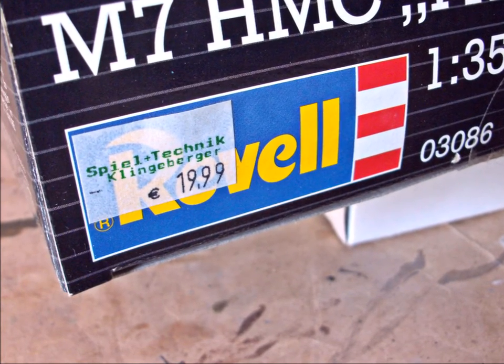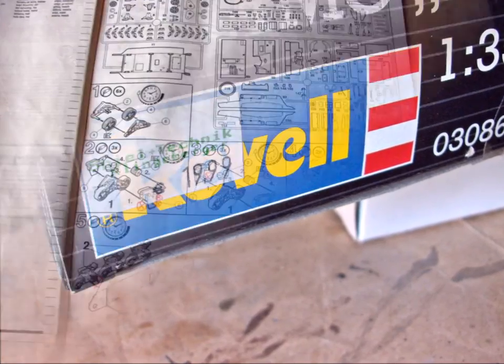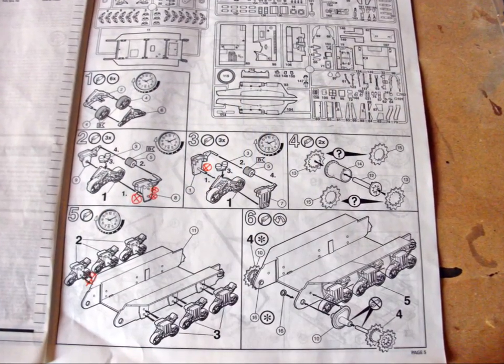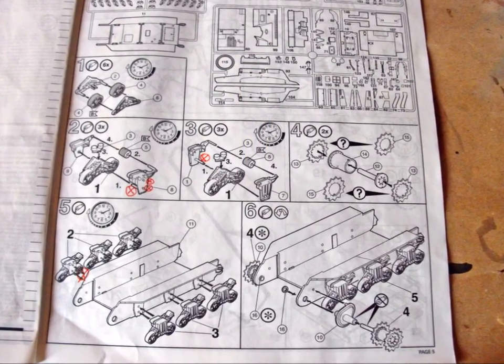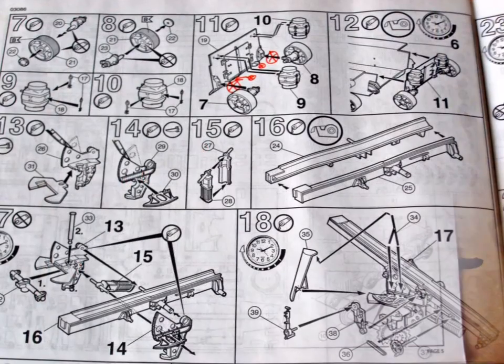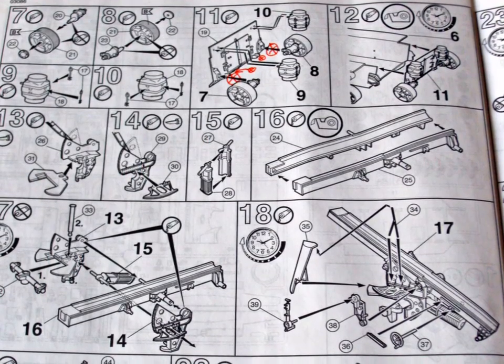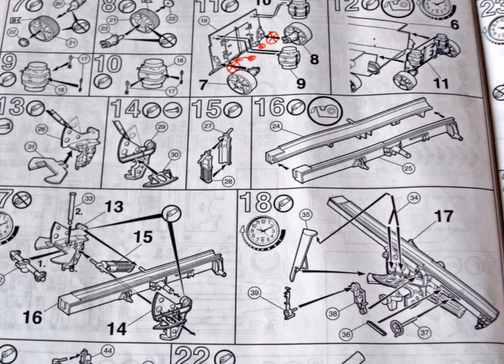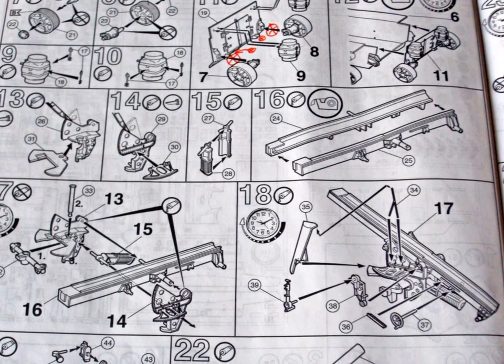The kit number is 03086. The instructions start with the assembly of the road wheels, return rollers, bogeys, and drive sprockets. Next is the assembly of the idler wheels, and here we have the weak point of the kit and the main reason for buying one of the upgrade kits I talked about.